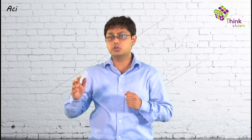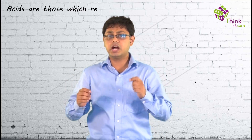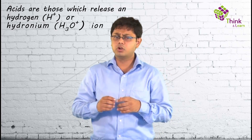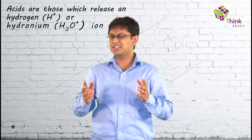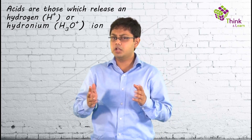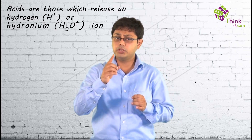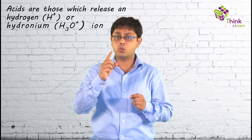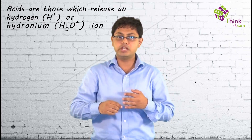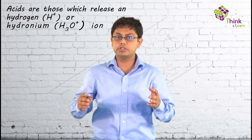Although the items described here are dramatically different, the acids in them have something in common, and understanding what that is is the key to understanding the whole chapter. The simplest way to define an acid is to say that acids are those that release a hydrogen ion or a hydronium ion. Before we answer what exactly a hydrogen or hydronium ion is, we need to understand one basic concept: how interaction happens in the world of chemistry.